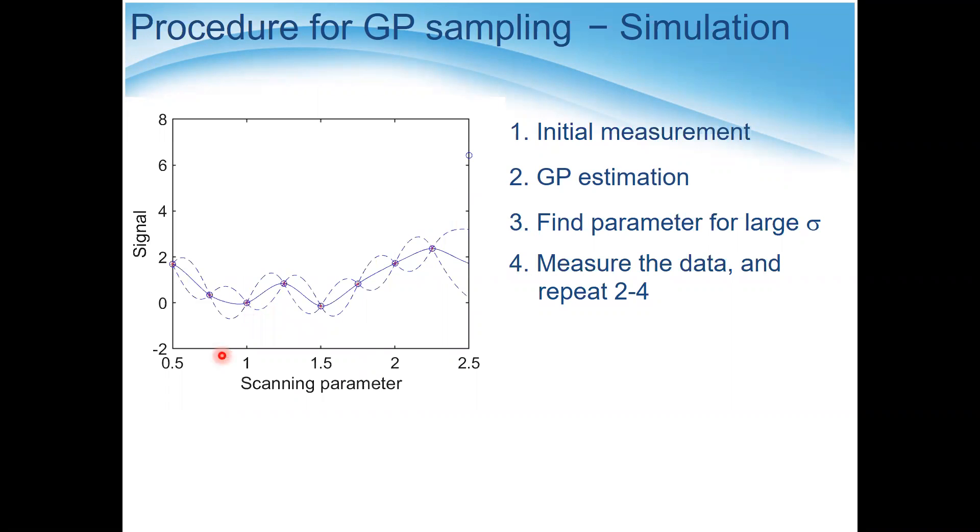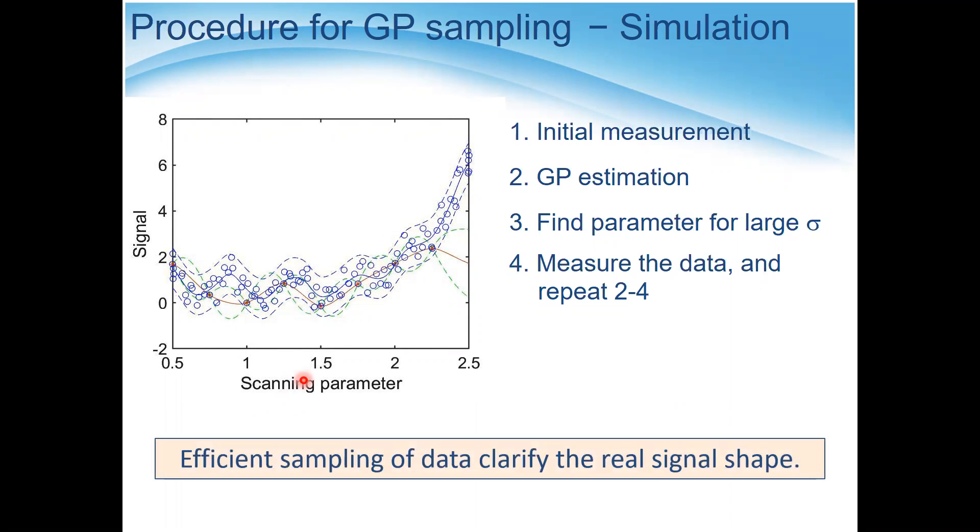Here's an example. Every time we obtain the signal and estimate the functional form. Gradually, initially we don't see any kind of oscillation, but gradually we find some sort of the real functional form. By using this efficient sampling, we can recover the real signal shape.